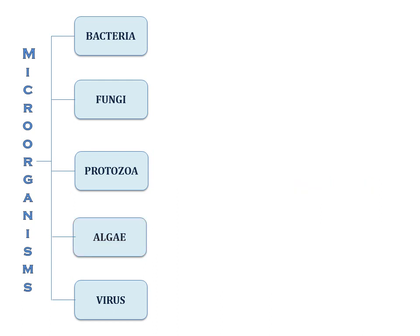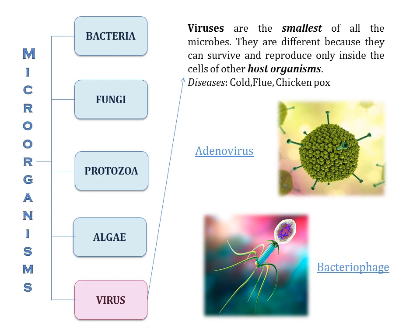The fifth group of microorganisms is the virus. Viruses are the smallest of all the microbes. They are different because they can survive and reproduce only inside the cells of other host organisms, unlike the other four groups which can survive both inside and outside other organisms. An example is Adenovirus, which causes fever, sore throat, diarrhea, and pink eye. Another example is bacteriophage, a type of virus used as a substitute for antibiotics.